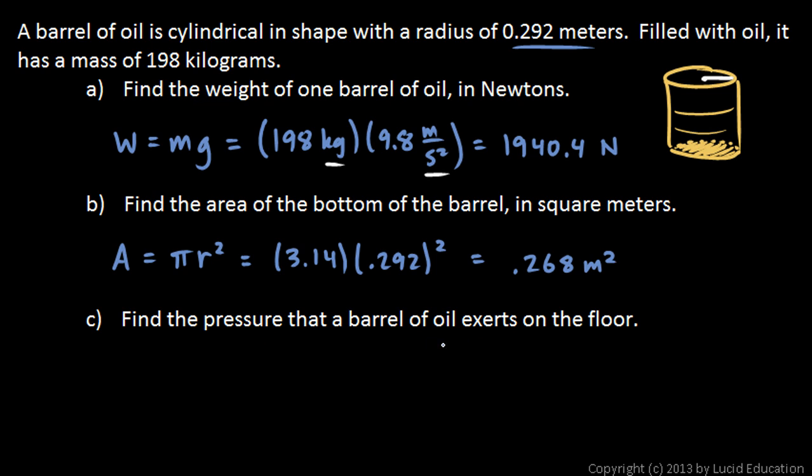Part (c): Find the pressure that a barrel of oil exerts on the floor. The barrel is resting on the floor, and its weight is spread out over this area. Pressure is force divided by area, so that's 1,940.4 newtons divided by 0.268 square meters. 1,940.4 divided by 0.268 works out to 7,240, and newtons per square meter is pascals, so 7,240 pascals.